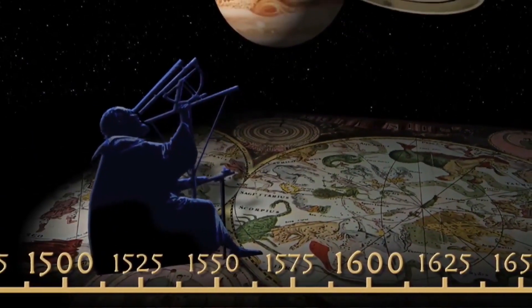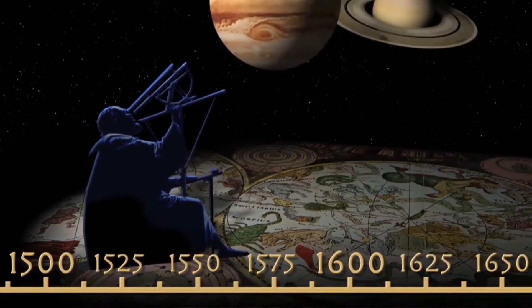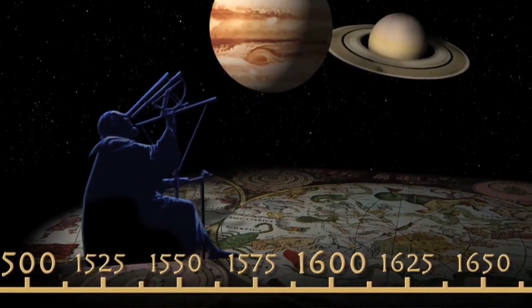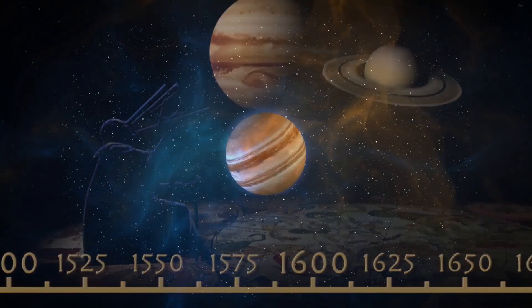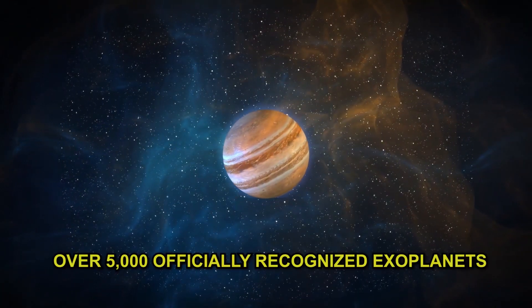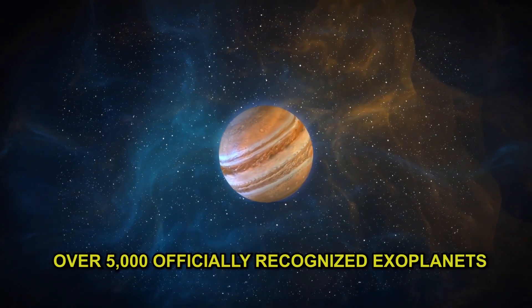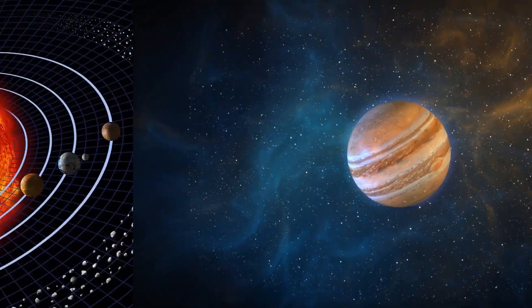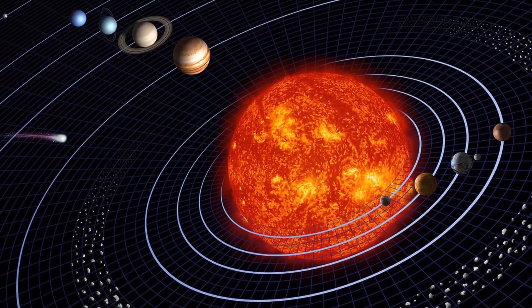In recent times, scientists have unearthed a large number of extrasolar planets, otherwise known as exoplanets. Currently, there are over 5,000 officially recognized exoplanets in our universe, each with its own specifications and characteristics.